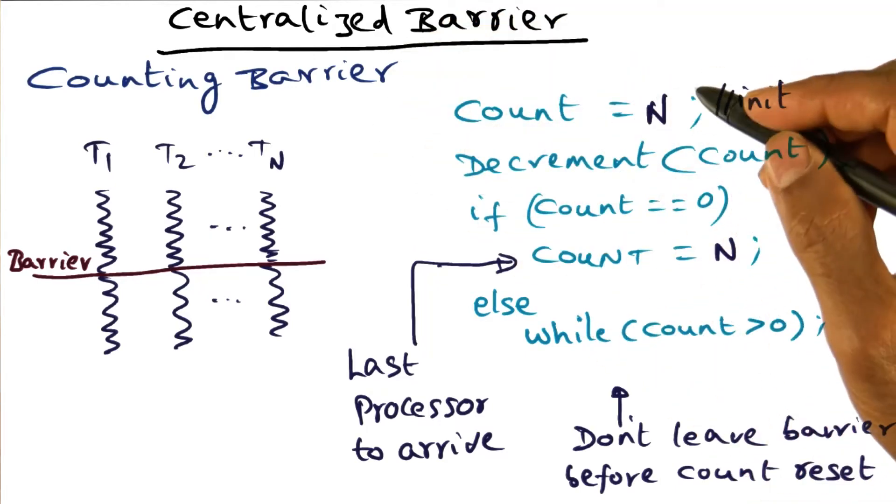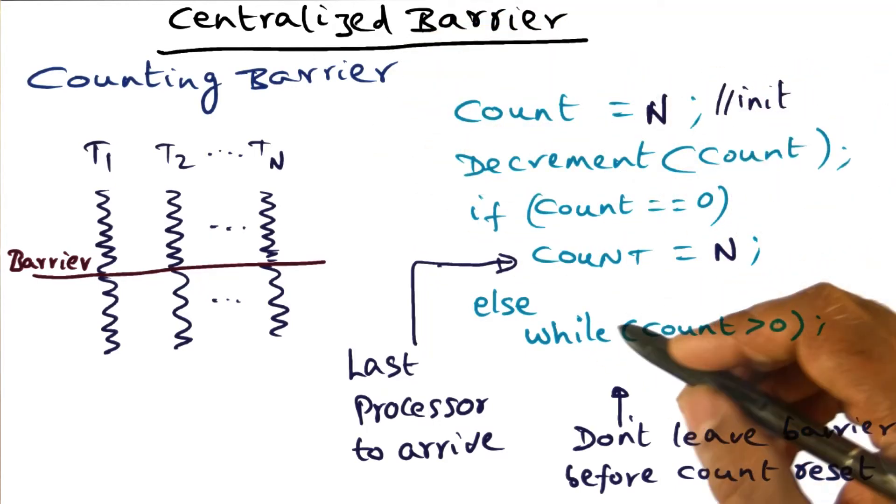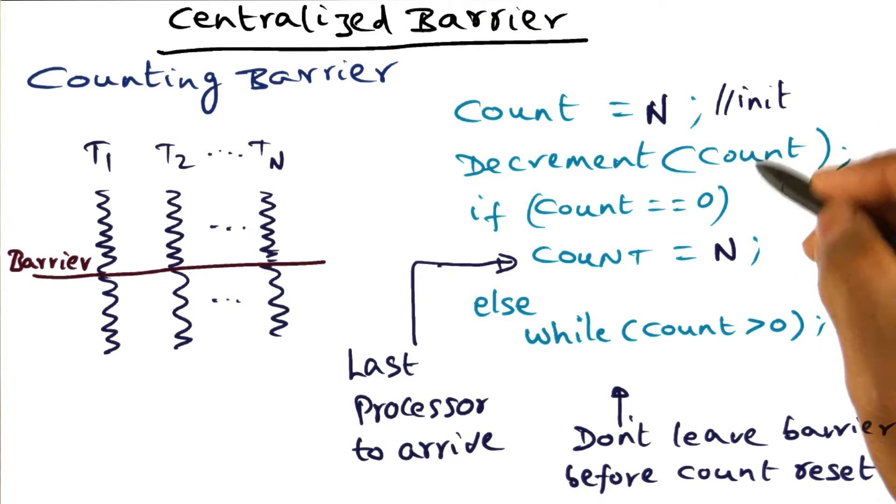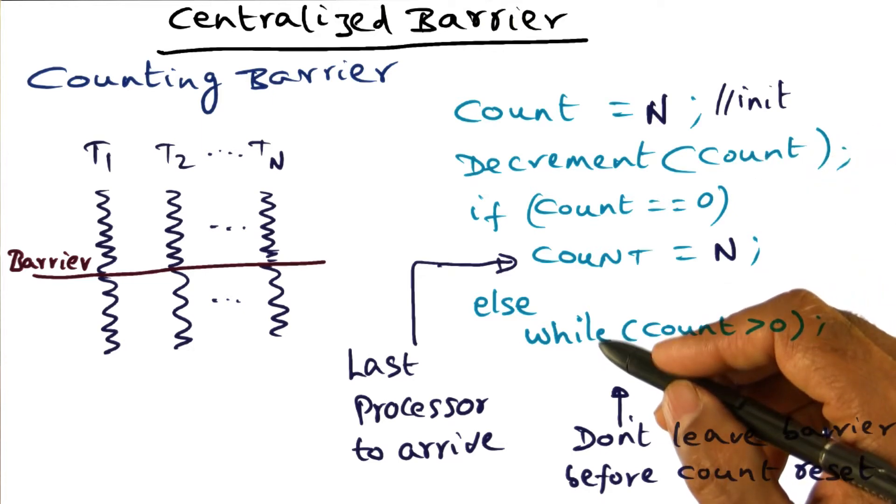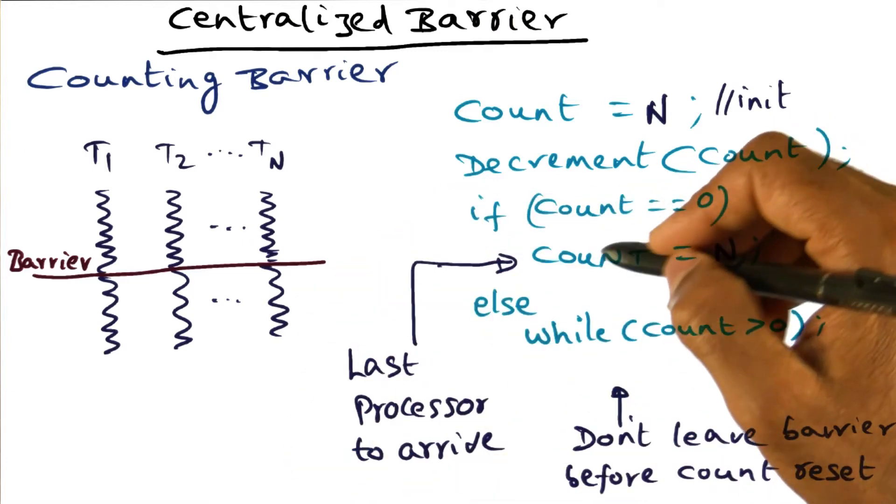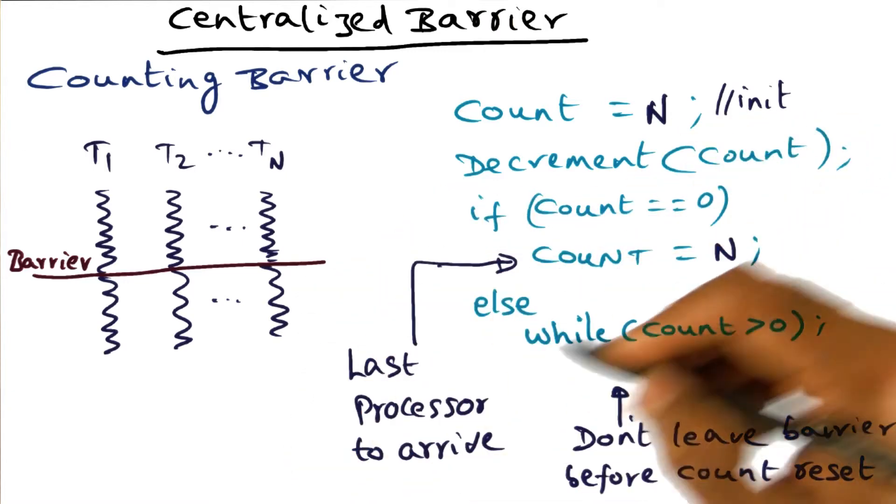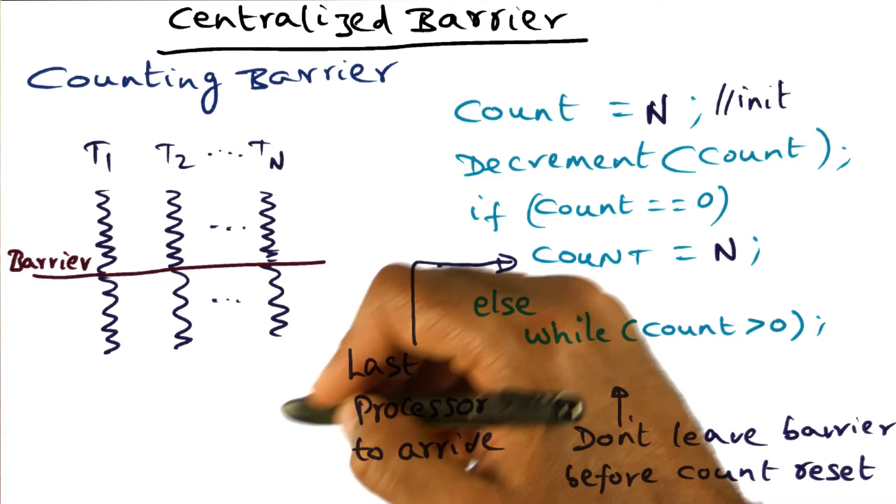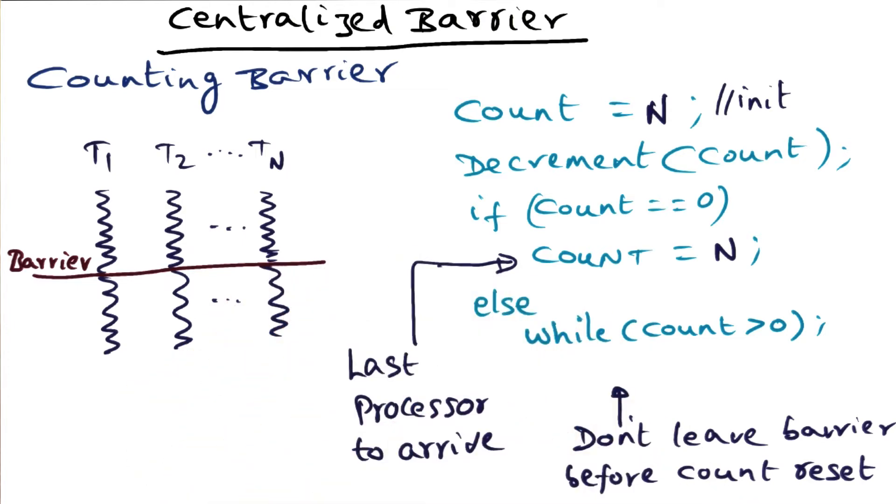There is a problem with the centralized barrier. When the count has become zero, if these threads are immediately allowed to go on executing before the count has been reset to n, then they can all reach the next barrier and fall through, and that is a problem.